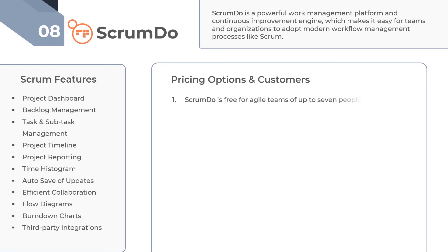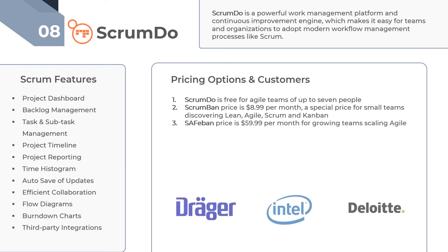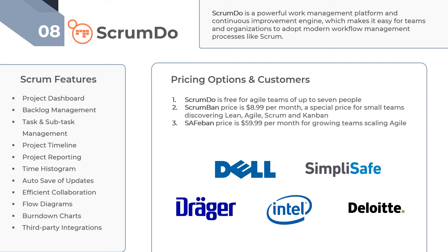ScrumDo is free for Agile teams of up to 7 people. The ScrumBand price is $8.99 per month, a special price for small teams discovering Lean, Agile, Scrum, and Kanban. Organizations that use ScrumDo are Deloitte, Dell, Draeger, Intel, Simplicif, and others.